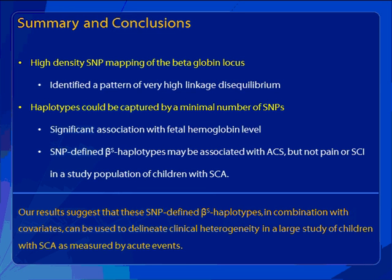In summary, we set out to create a very dense SNP map of the beta-globin locus. We identified a pattern of very high linkage disequilibrium, and related to that, we only identified a small number of haplotypes — just three predominant haplotypes — that could be captured by a fairly small number of SNPs. We found that those haplotypes had a significant association with fetal hemoglobin level. And we found that our SNP-defined haplotypes may be associated with acute chest syndrome, but not pain or silent cerebral infarct, at least in our study.